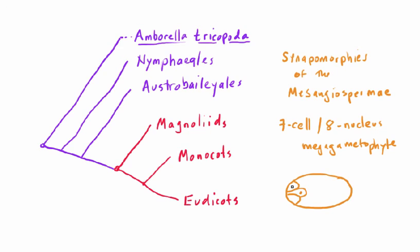So the 7-cell, 8-nucleus megagametophyte is actually a pretty good mesangiosperm synapomorphy. But it's no easy task to count the cells and nuclei in the megagametophyte — it would require collecting flowers at just the right stage, then fixing and staining the material, slicing it up into many individual sections, and examining the three-dimensional structure with a microscope.